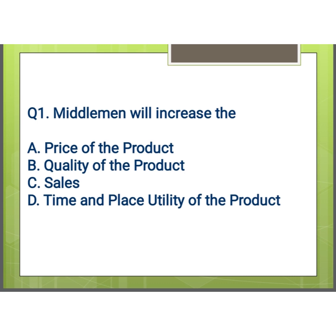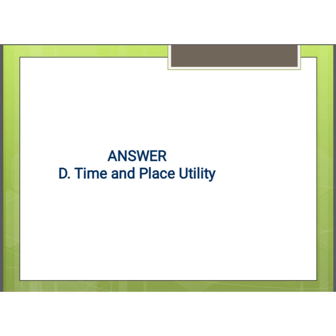Options are: A) price of the product, B) quality of the product, C) sales of the product, and D) time and place utility of the product. And our answer is D, that is time and place utility.